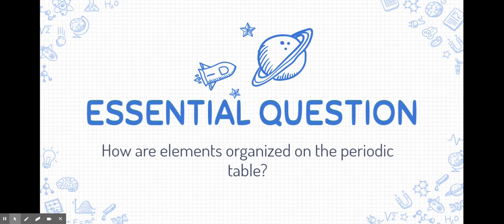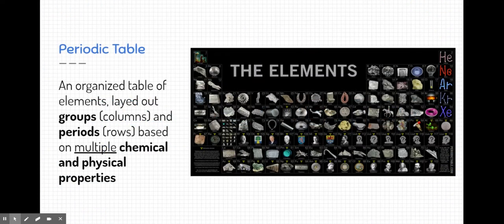Hopefully by the end of these notes, we can start answering this question in a deep way. Let's start with what the periodic table is. The periodic table is an organized table or chart of elements laid out in groups and periods based on multiple chemical and physical properties. This unit is dedicated to explore those multiple chemical and physical properties.